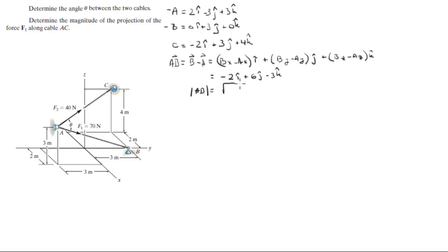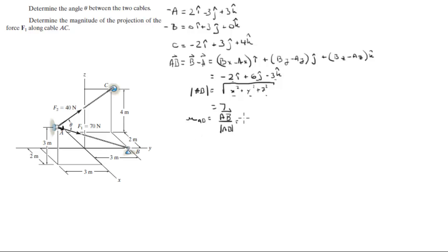Then you want to find the magnitude of this vector, which you find by doing the square root of x² plus y² plus z². Plugging in each of these values, you get that the magnitude is equal to 7. Then you find the unit vector acting along it by dividing the vector by its magnitude, giving you negative 0.286i plus 0.857j plus 0.571k.